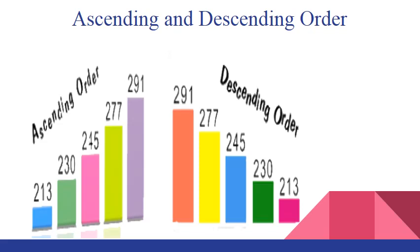On the right hand side, we see the numbers are arranged in their decreasing order. That is 291, 277, 245, 230 and 213. This means that the numbers are arranged in descending order.